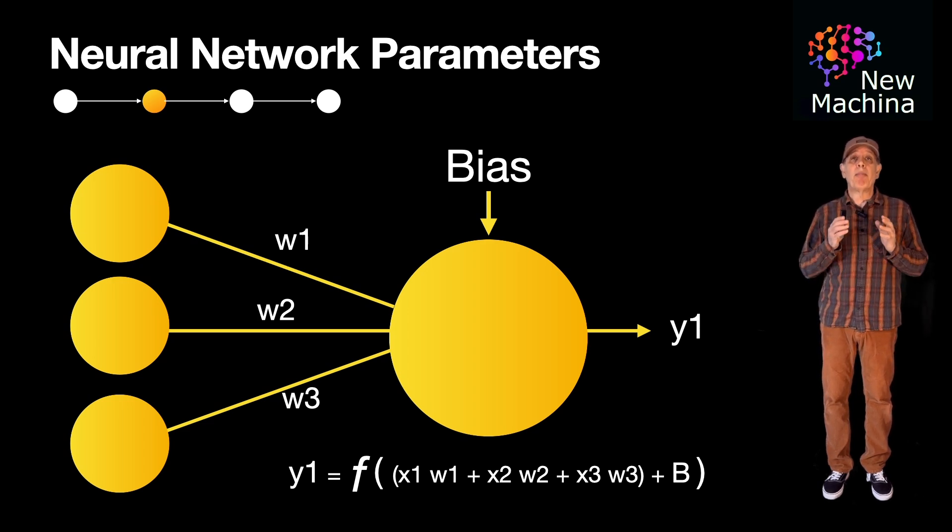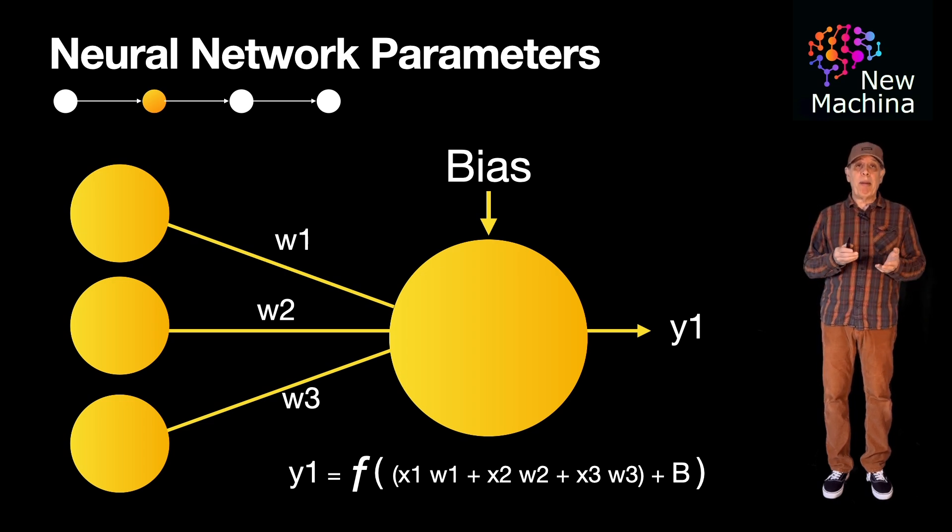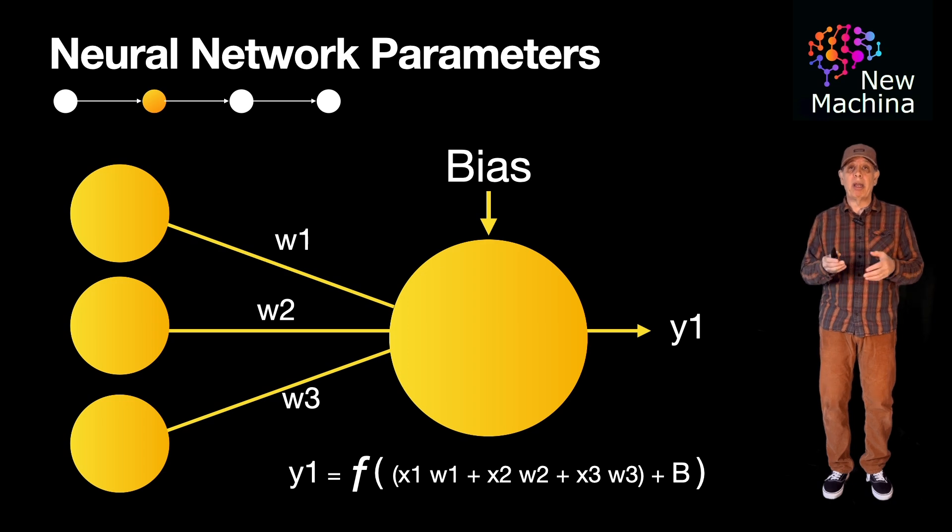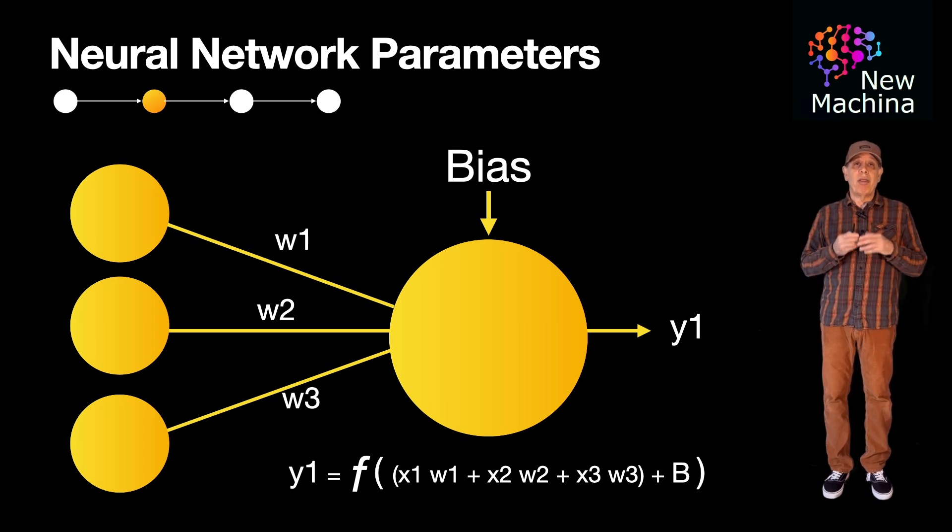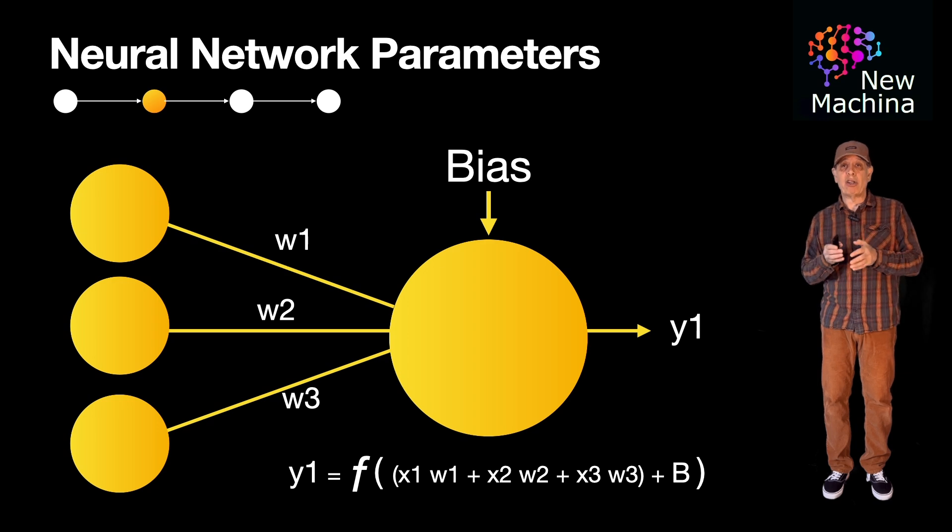In this neural network, both weights and biases are parameters. A parameter refers to a learnable element of the model. These learnable elements have values that get adjusted during model training to minimize the error between the predicted and actual output.